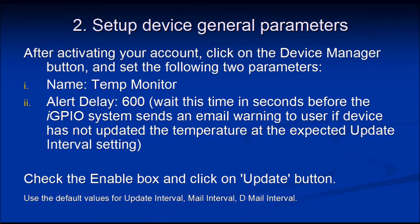The next step is to set up your device general parameters. After activating your account, click on the Device Manager button and set two parameters: a name — in this case we'll call it 'temp monitor' — and an alert delay, which you set to 600 seconds, the time before IGPIO sends an email warning if your device has not updated at the expected interval.